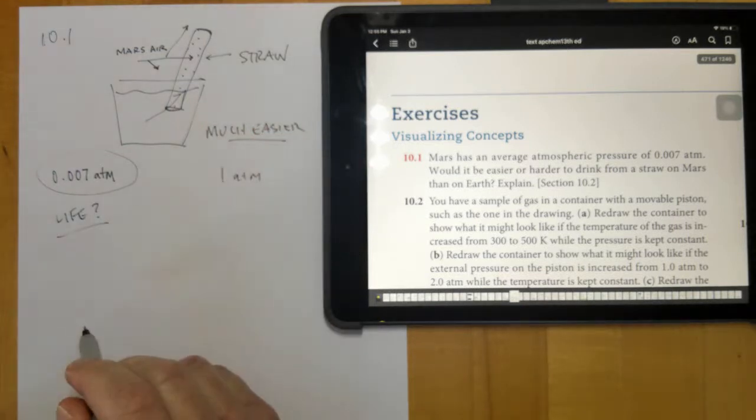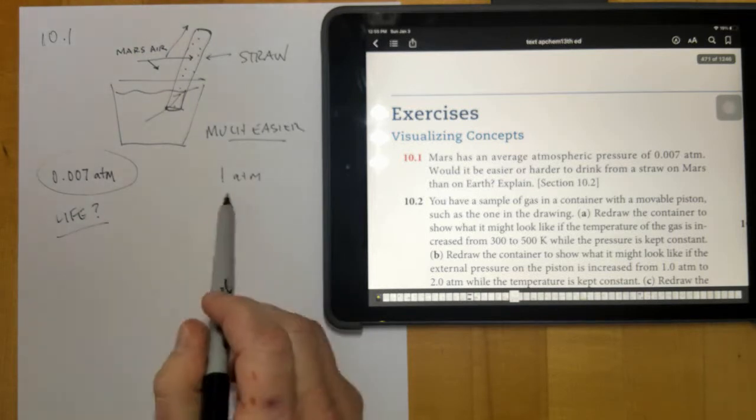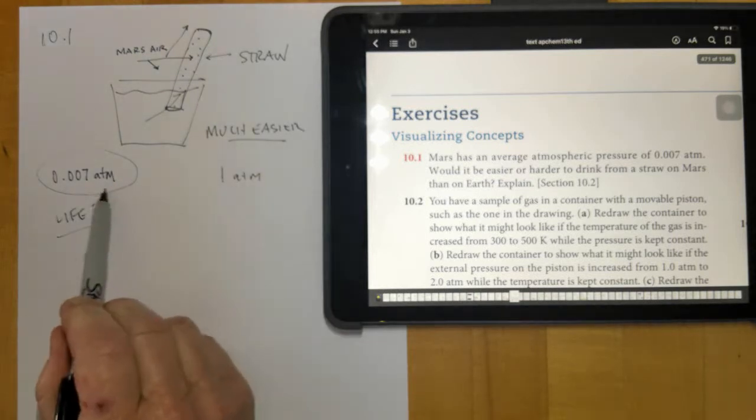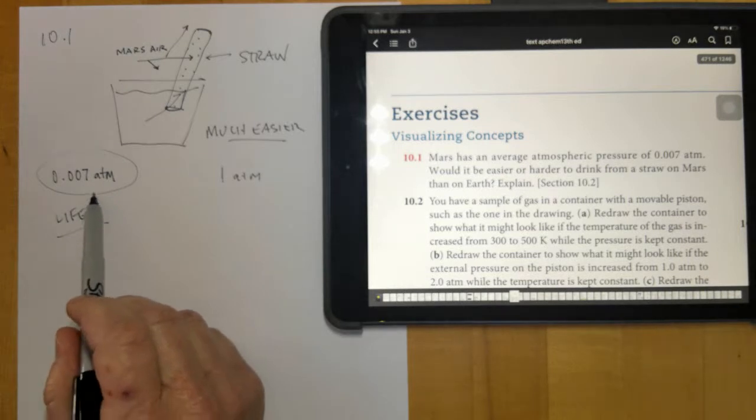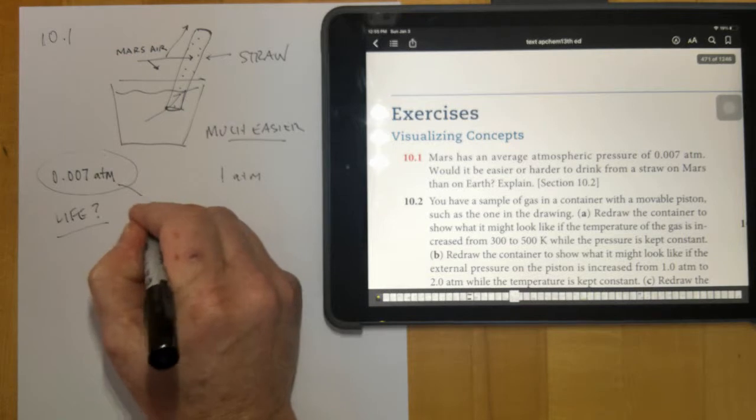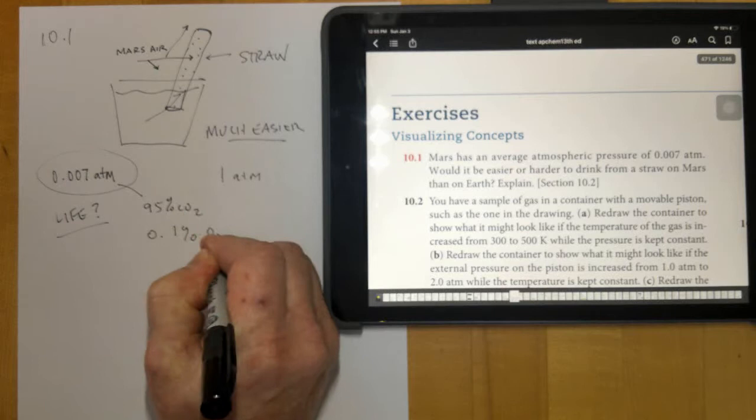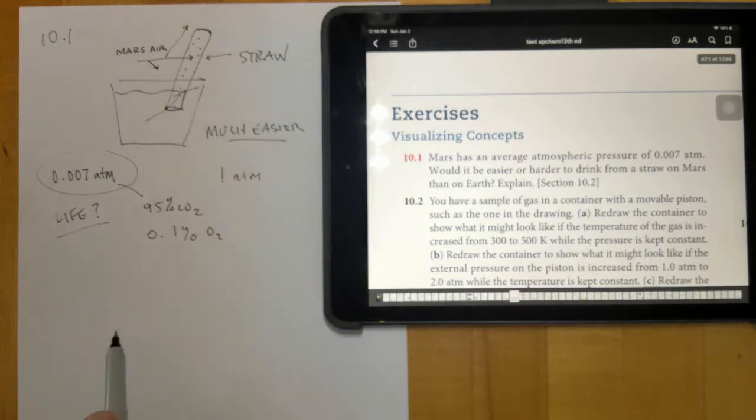Of course, life on Mars would be really challenging because you'd be at a fraction of the atmospheric pressure, and that would not hold you together very well. Of this atmosphere, 95% is carbon dioxide and only 0.1% is oxygen. So you'd be in big trouble if you were on the surface. But it would be easier to drink from a straw on Mars than on Earth.